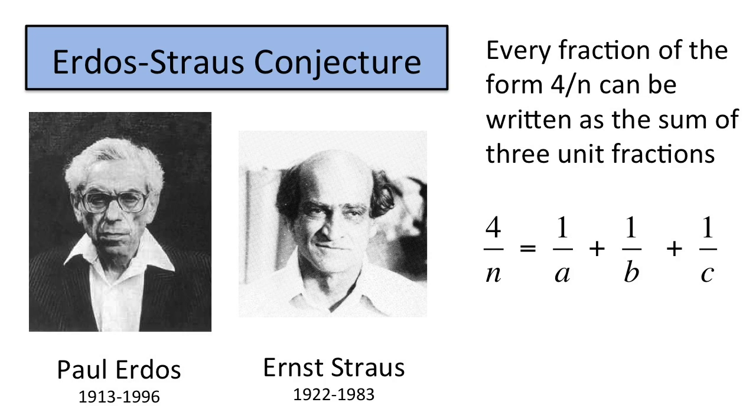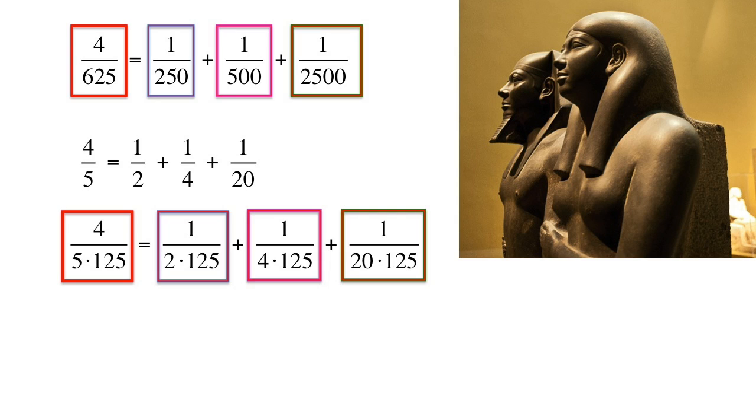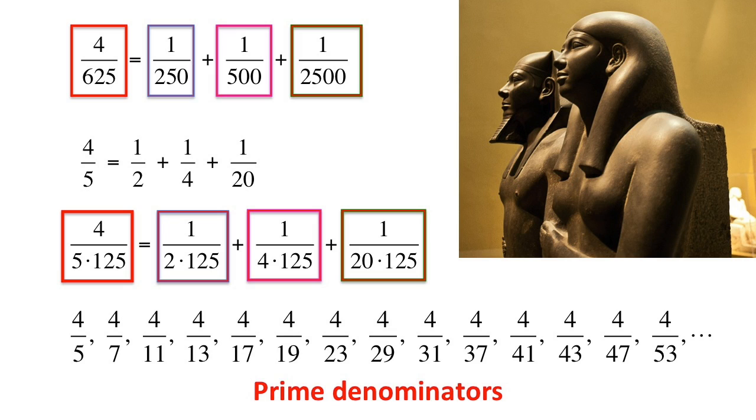In the previous example, a choice with smaller denominators is this formula. This was found by using this simpler formula and dividing each term by one twenty-five. This example highlights that to prove the Erdős-Strauss conjecture, it is sufficient to consider only the fractions four over n where n is a prime number.